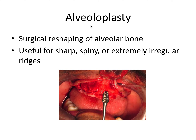Now, what can we do to fix these conditions and get the patient ready for a denture? The first is alveoloplasty — the surgical reshaping of alveolar bone. This can be done with a surgical burr, rongeur forceps, or a bone file. It's useful for sharp, spiny, or extremely irregular ridges that interfere with proper denture seating.